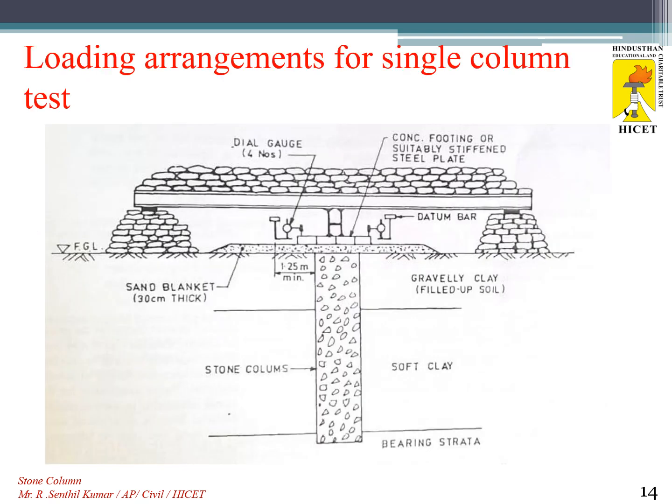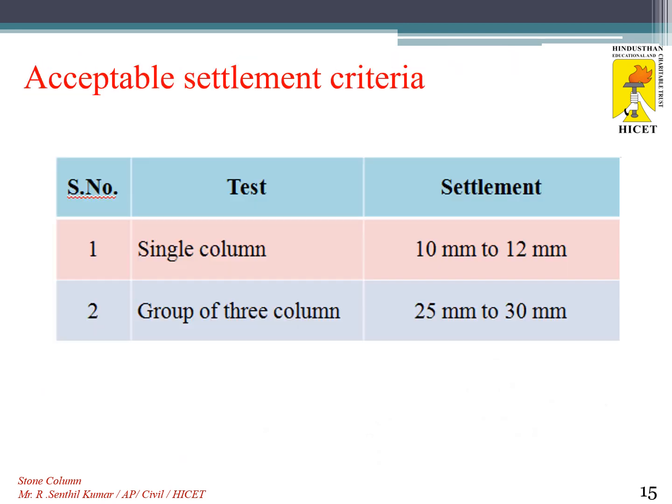This picture shows the loading arrangement for a single column test, with a loading cantilever above the stone column resting in soft clay. A sand blanket of 30 cm thick is provided above the column, and dial gauges are fixed at the datum bar to measure settlement after applying the loads. The acceptable settlement criteria: for a single stone column, 10–12 mm; for a group of three columns, 25–30 mm.